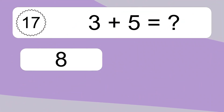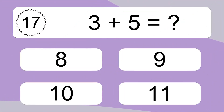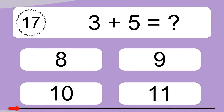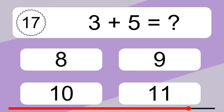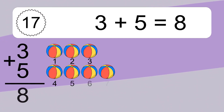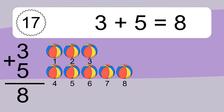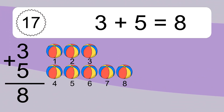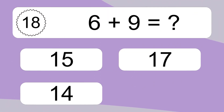3 plus 5 equals what? 3 plus 5 equals 8. Let's count it: 1, 2, 3, 4, 5, 6, 7, 8.